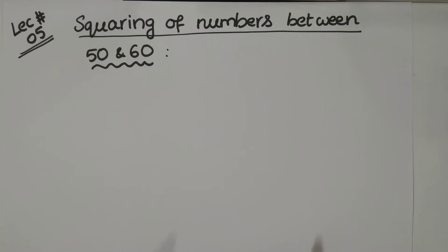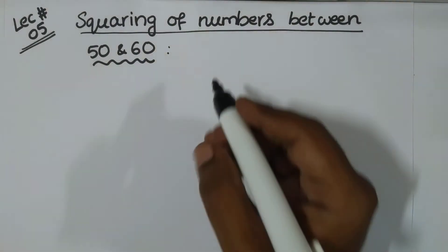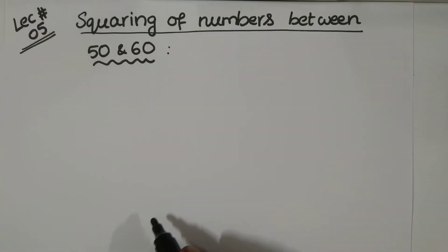Greetings. Welcome to lecture number 5. Squaring of numbers between 50 and 60. This comes under specific techniques of Vedic mathematics.